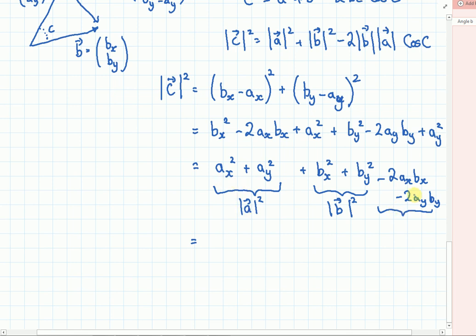We've now got modulus of A squared plus modulus of B all squared minus 2AXBX plus AYBY.